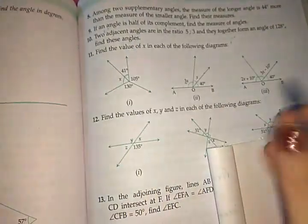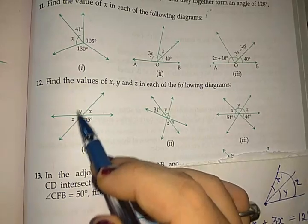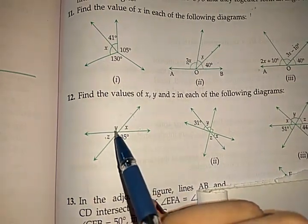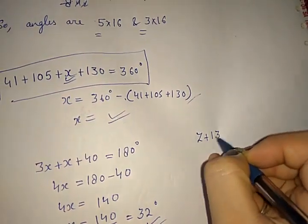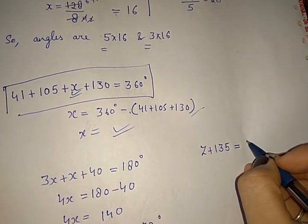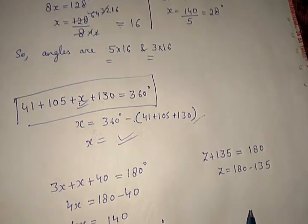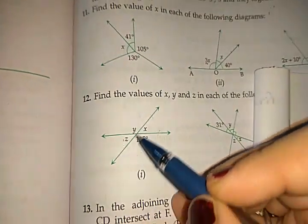Now in this case you need to find the values of x, y, and z. First, find z: this is a straight line so z plus 135 equals 180 degrees, which gives z equals 180 minus 135. Then for x: this is also a straight line, so x plus 135 equals 180 degrees.